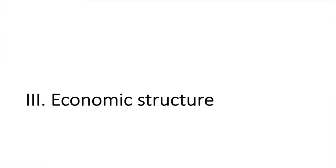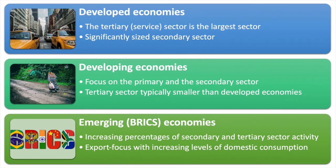Third is the economic structure of industry. Developed economies typically have a dominant tertiary or service sector, with their secondary sectors relatively small by comparison. The supporting statistics are from the CIA World Factbook as of 2017. In the EU, for example, the secondary sector accounts for approximately 25% of GDP, and the primary sector is less than 2% of GDP.